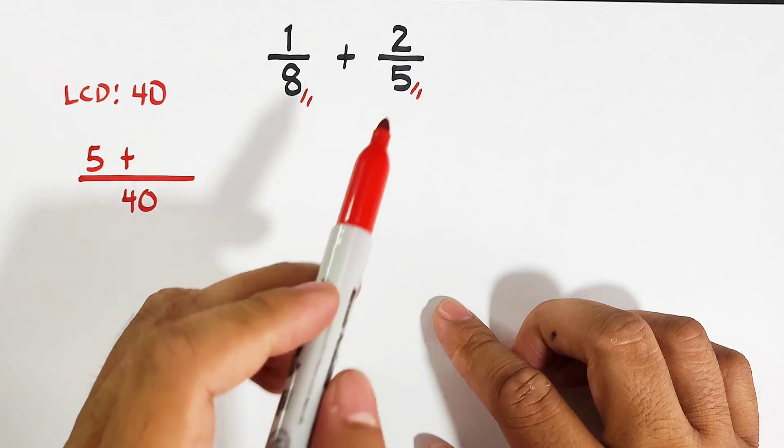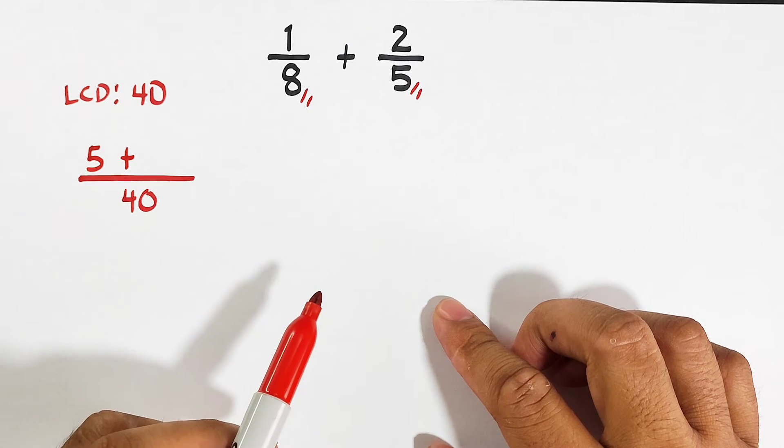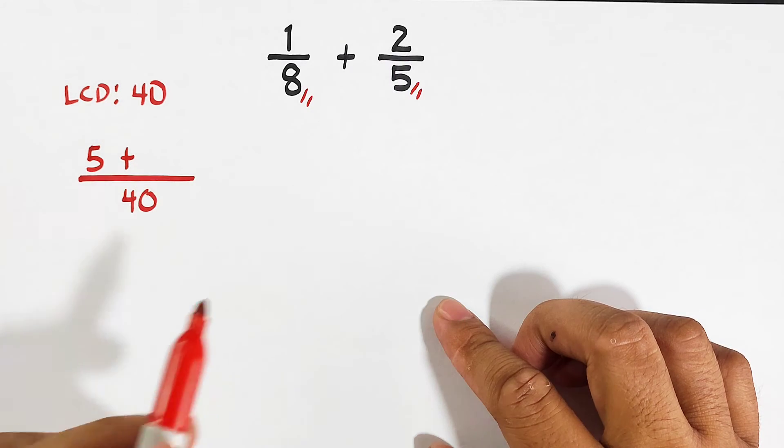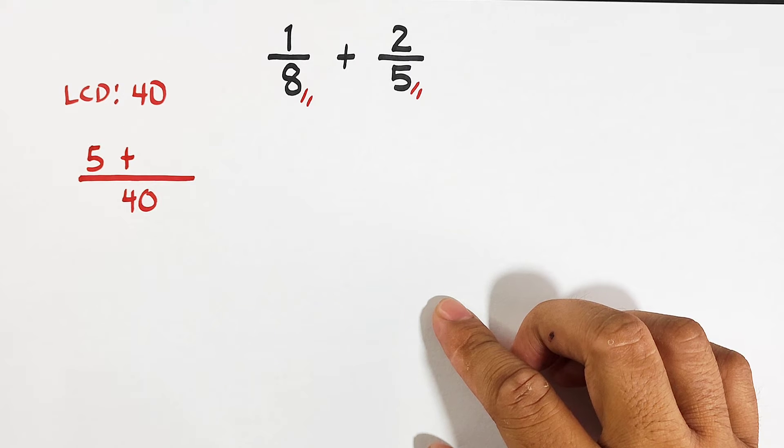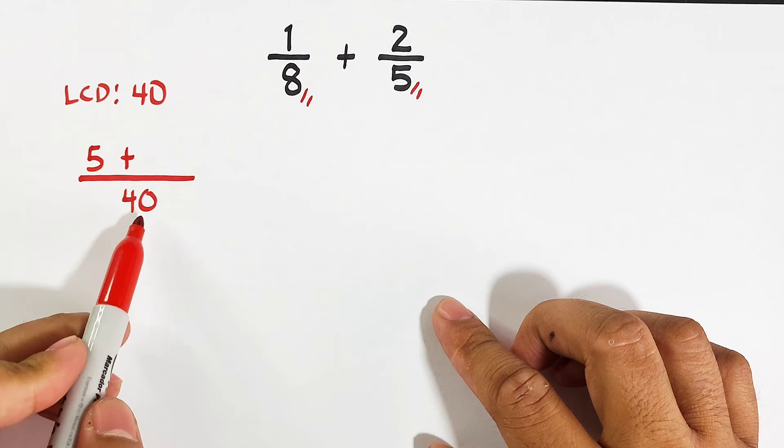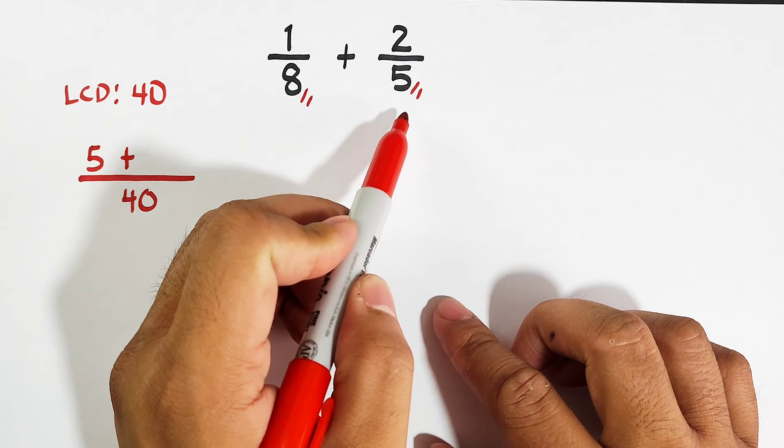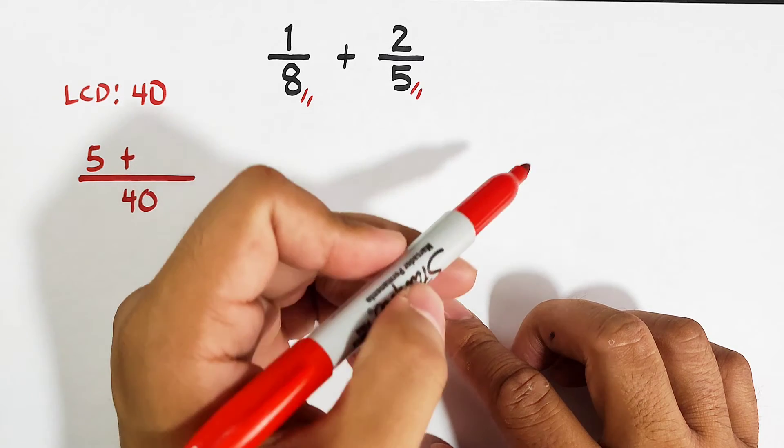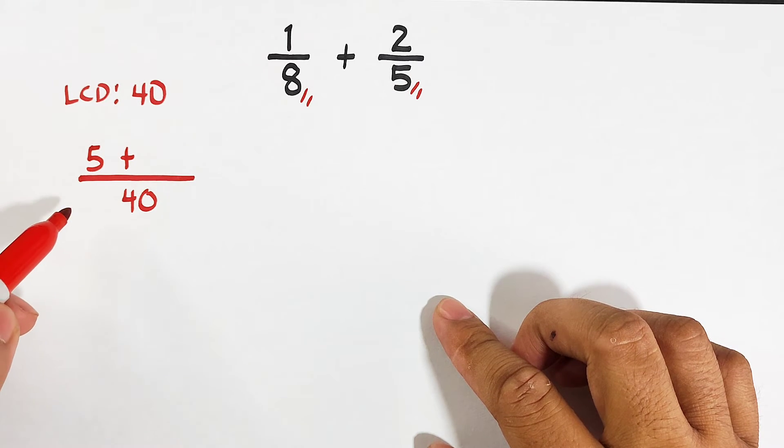Next, 40 divided by 5 is 8 times 2. We have 16. So let me repeat that: 40 divided by 5 is 8 times 2. That is 16.